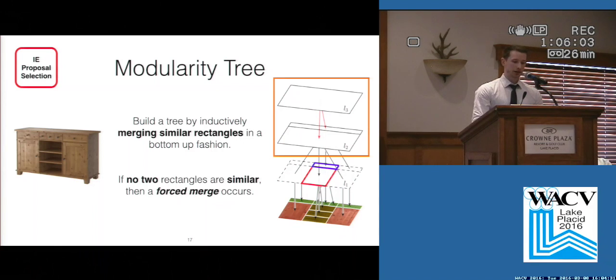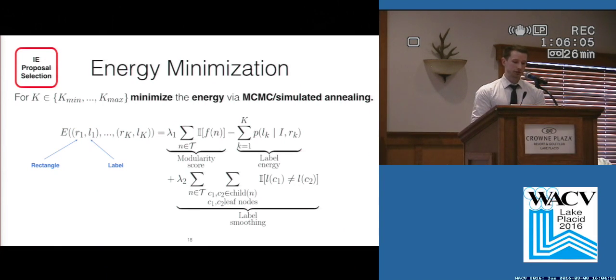For each k between the two bounds from the first step, we minimize an energy function defined over a selection of k proposals. We maximize modularity by minimizing the number of forced merges, maximize the label probabilities which are the weights of the proposals, and include an additional smoothing term for the labels.